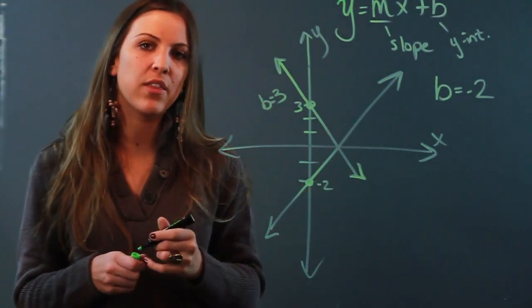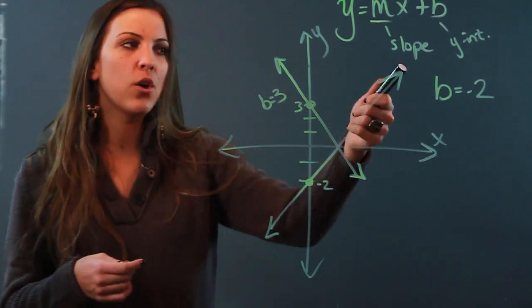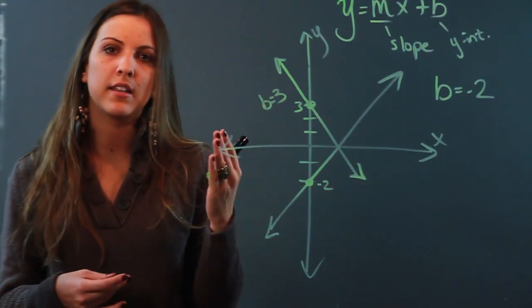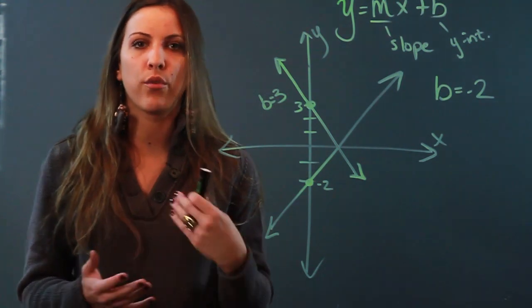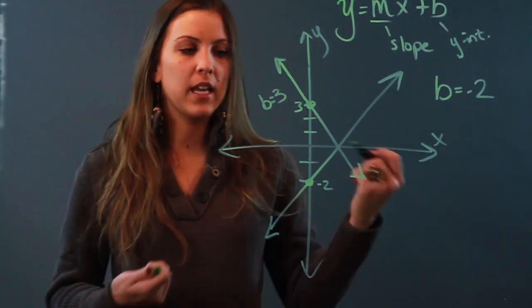Your y-intercept is just where your line hits the y-axis. Now your slope is how steep your line is, and the way that you measure your slope is the rise over the run, meaning if you pick any two points on